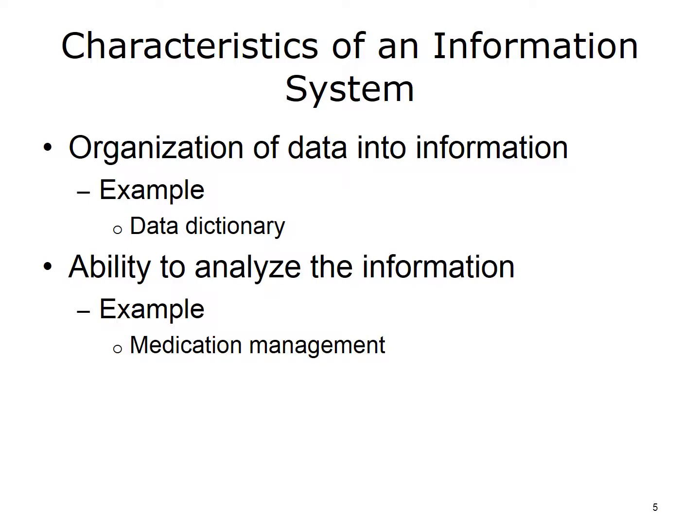An example of how data may be organized is via a data dictionary. AHIMA defines a data dictionary as a descriptive list of the names, definitions, and attributes of data elements to be collected in an information system or database, whose purpose is to standardize definitions and ensure consistent use, being a central repository of information about stored data, used to help organize the data. Going back to the previous example, using a handheld barcode reader that registers each medication, a nurse would use information systems to verify the correct medication was ordered and document the actual administration of the medication.